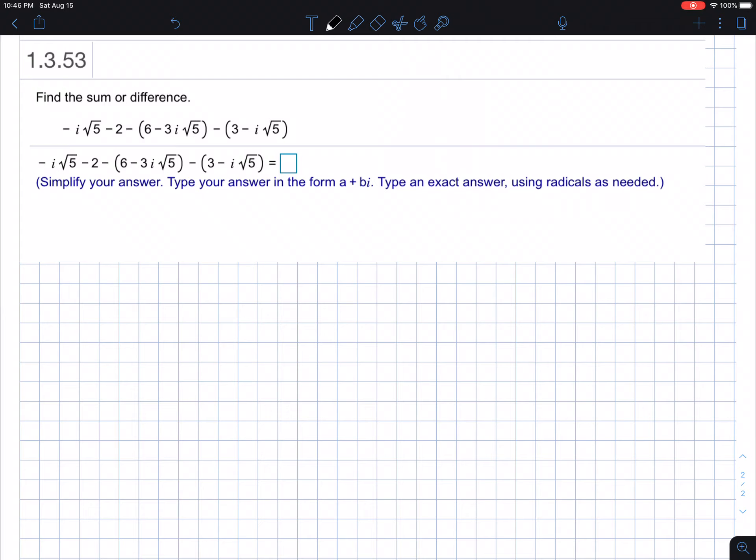Okay, so I like to start by getting a copy of the original. So we have negative I times the square root of five minus two minus six minus three I times the square root of five minus three minus I square root of five.